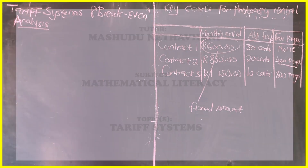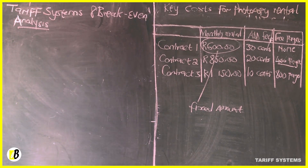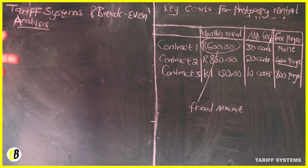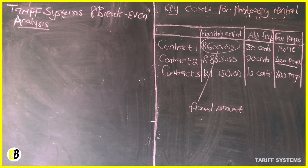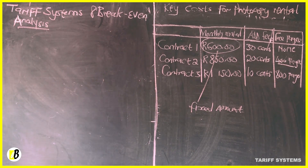Hello guys, welcome back again. Today I'm going to be focusing on tariff systems and break-even analysis. These two terms are in your Grade 11 curriculum. Tariff systems are meant for you to determine the best appropriate option — whether you're purchasing a vehicle through contract, renting a house, or having some sort of cell phone contract — to determine the best option for any agreement you're going to have.